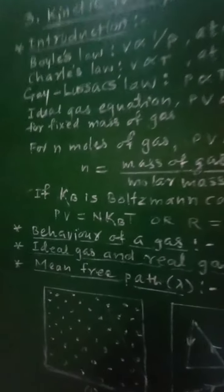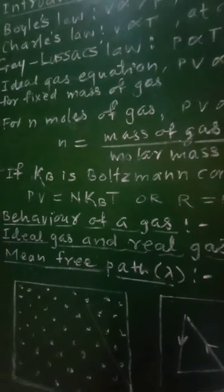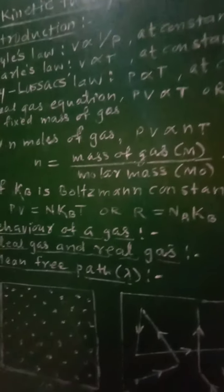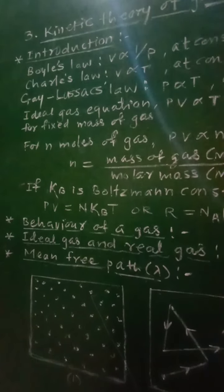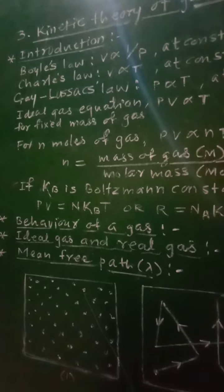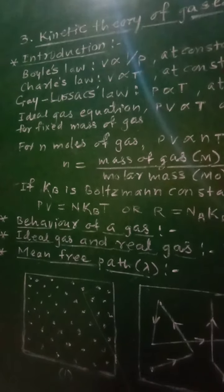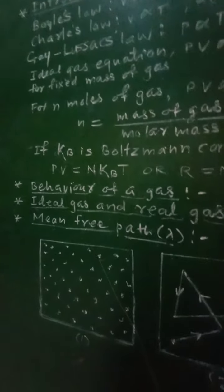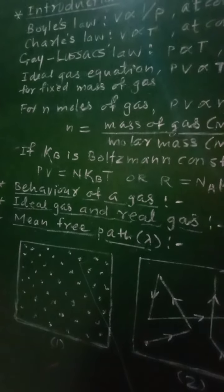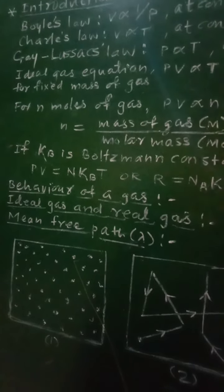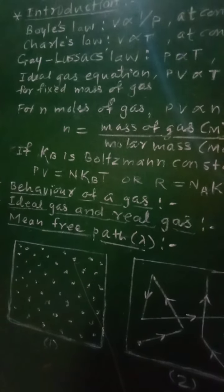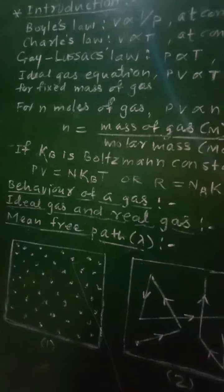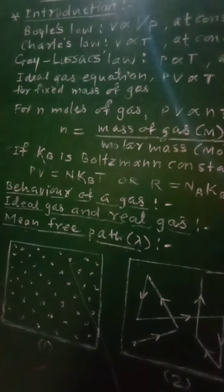Now let us see the next point: the behavior of a gas. A gas enclosed in a container is characterized by its pressure, volume, and temperature. These parameters are very important for any enclosed gas. This is the macroscopic description of the gas. We know that the particles of the gas — that is, the molecules — are in constant motion, and it is very difficult to understand the behavior of the gas in terms of the motion of a single gas particle.